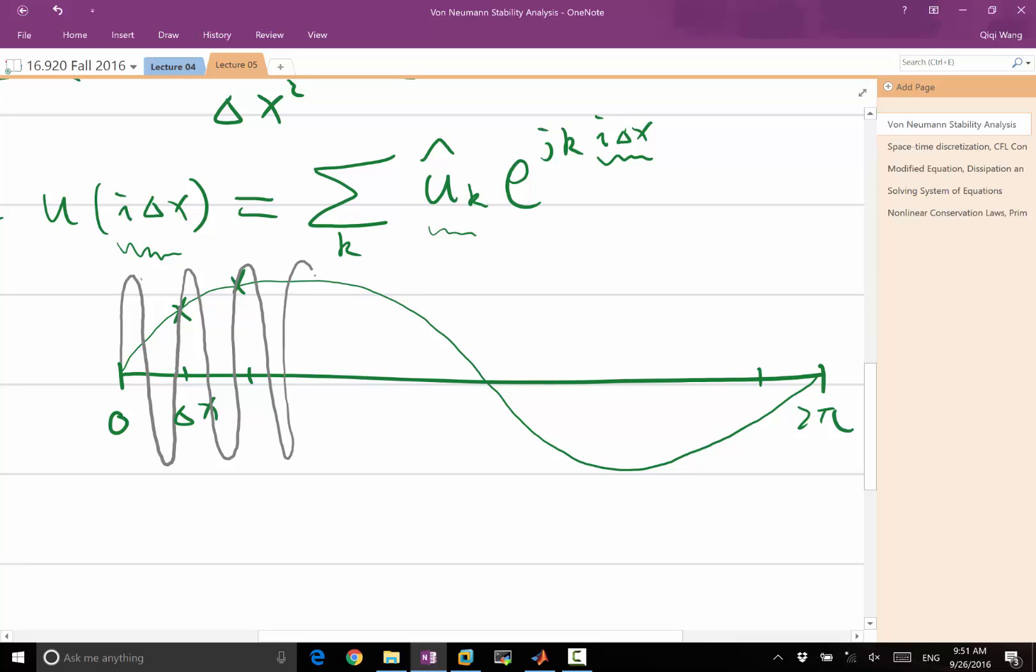This way we have two functions whose frequency is different by what? If this long wave has k equal to one, what is the k corresponding to the grid line? This is k equal to one, this is k equal to what?